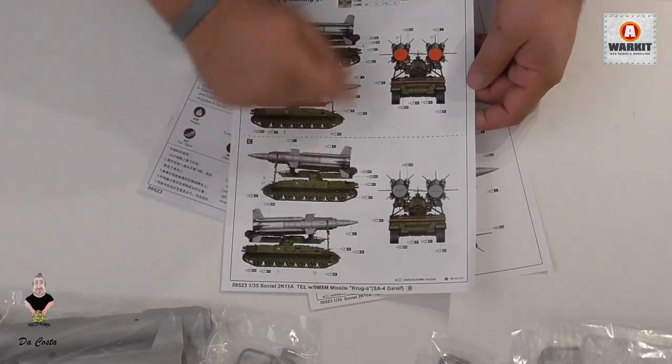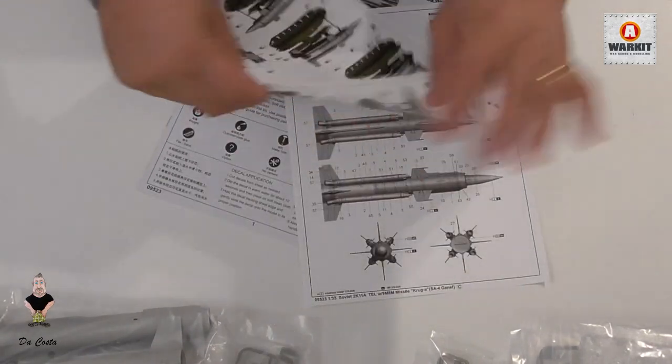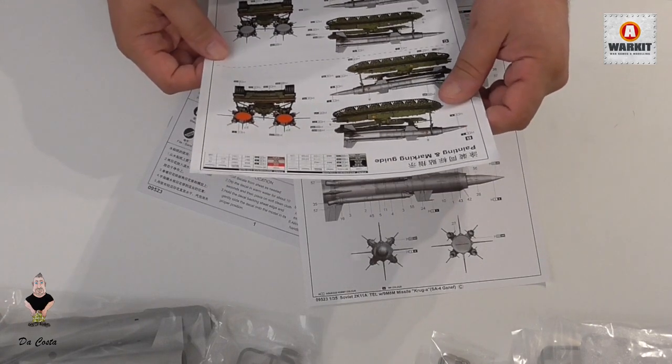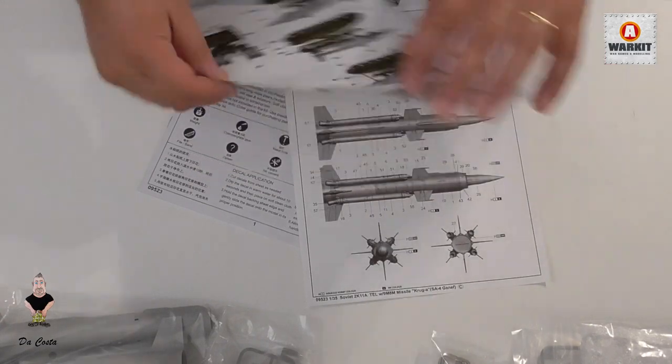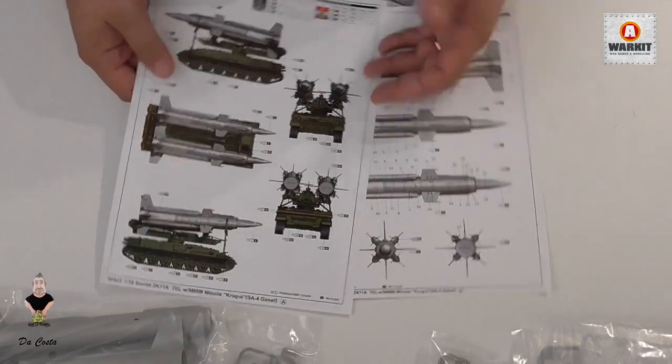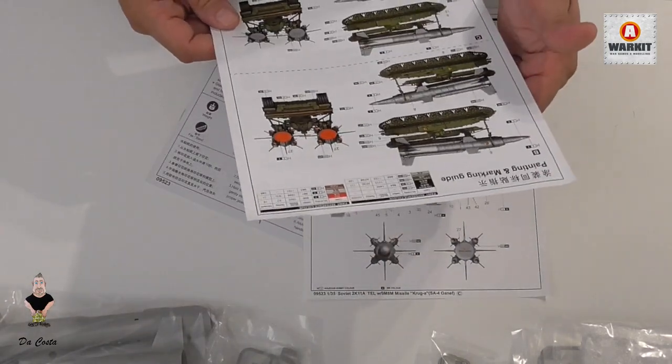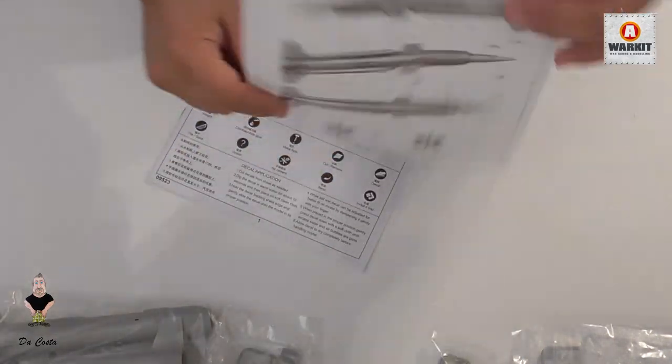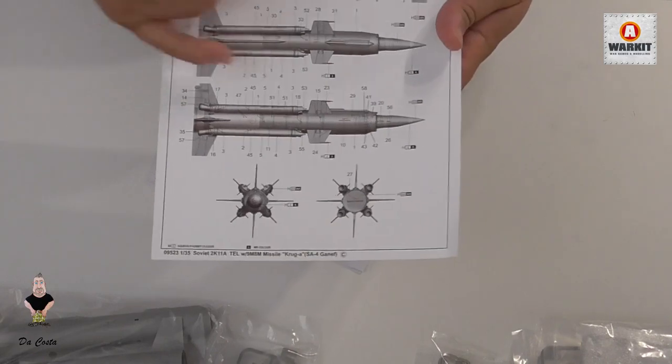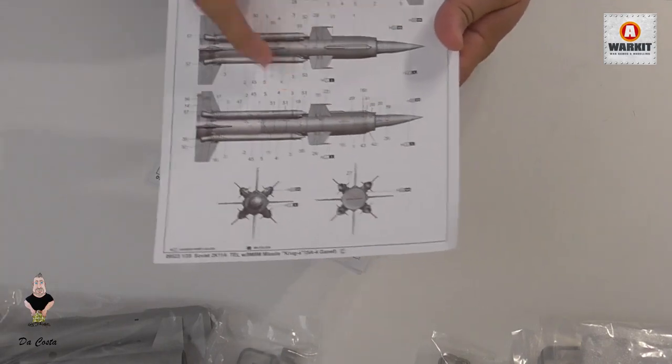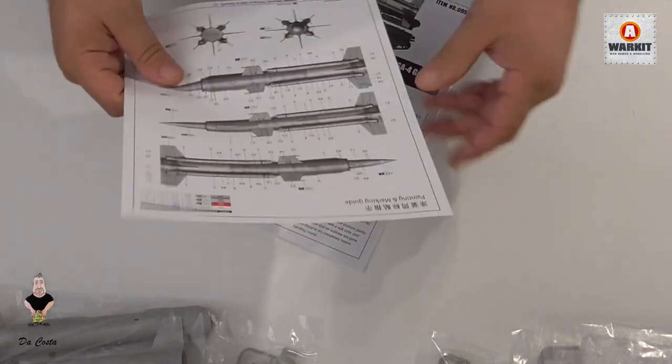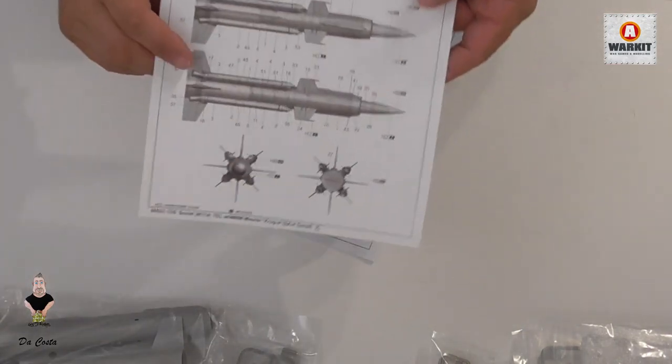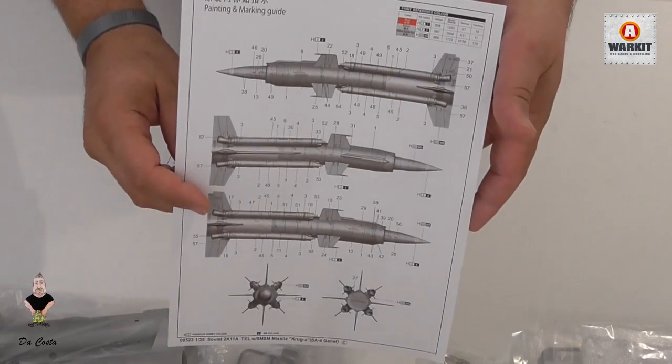You can see all the colors and paint references - Mr. Hobby, Vallejo, Tamiya, and Humbrol. You've got three different types to make. We have all the decals and the paint work on this one. It's really awesome. This missile is really, really awesome.